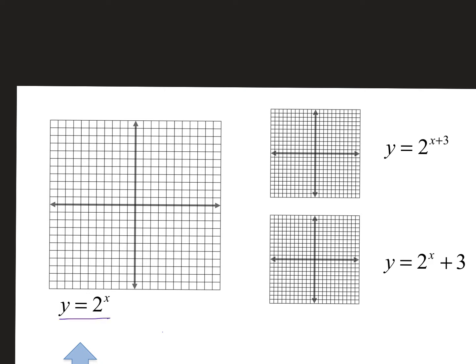I have this one over here written larger because this is gonna be my parent graph. If I can figure out exactly how to graph this, then the other two are just shifts of it. This one's gonna move it to the left 3, this one's gonna move it up 3. Those are really easy. It's just a question of what the heck does this original one look like?